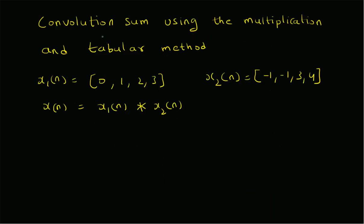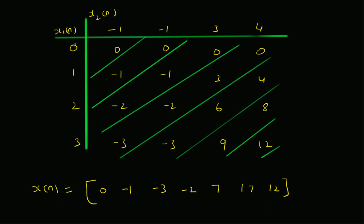To summarize: given two sequences x1(n) = {0, 1, 2, 3} and x2(n) = {-1, -1, 3, 4}, we first build a table with the first signal across the rows and the second signal across the columns, then compute the products of corresponding elements and fill the table. The first row is {0, 0, 0, 0}, the second row is {-1, -1, 3, 4}, and so on.